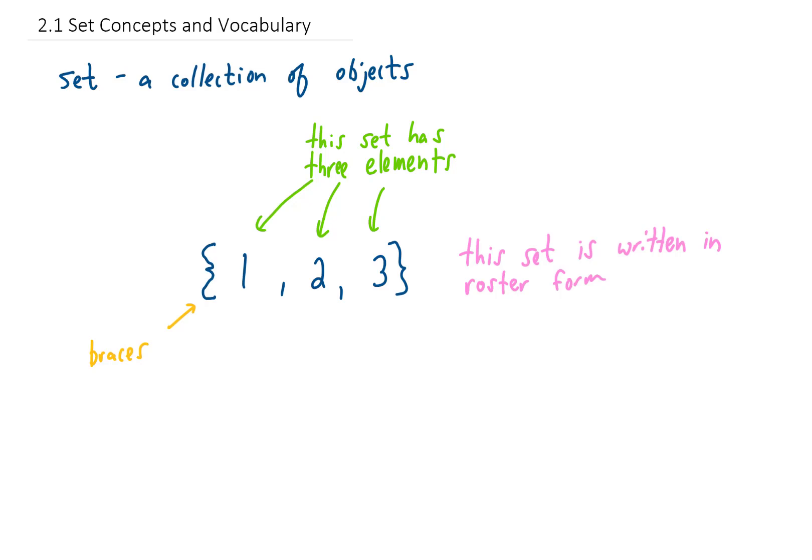A set that we're going to use throughout this chapter is called the natural numbers. We typically denote this set with an N, or sometimes we use a fancier version of that N. And the natural numbers is the set of all of our counting numbers: 1, 2, 3, 4, 5, and so on.